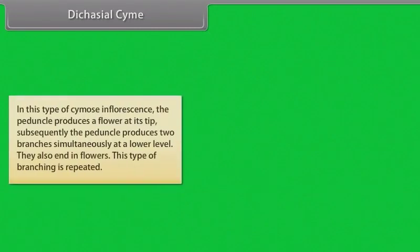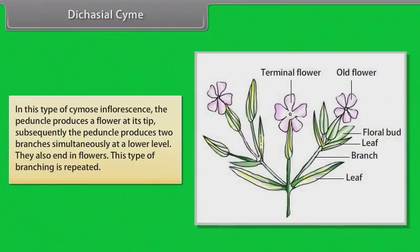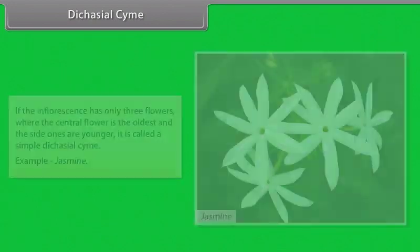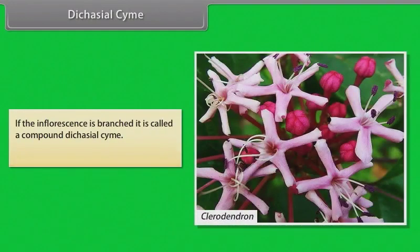In dichasial cyme, the peduncle produces a flower at its tip; subsequently the peduncle produces two branches simultaneously at a lower level which also end in flowers, and this branching is repeated. If the inflorescence has only three flowers where the central flower is the oldest and the side ones are younger, it is called a simple dichasial cyme — example: jasmine. If the inflorescence is branched, it is called a compound dichasial cyme — example: Clerodendron.